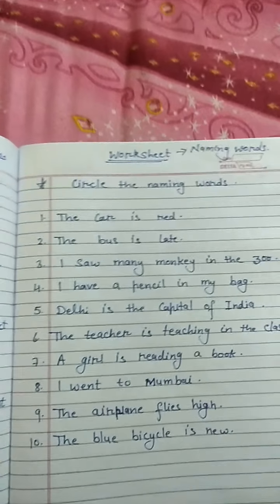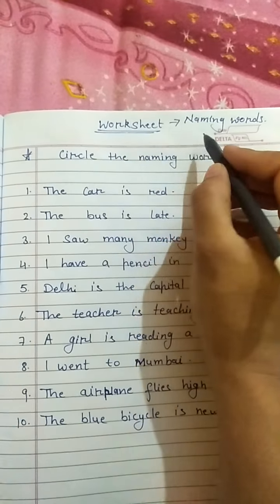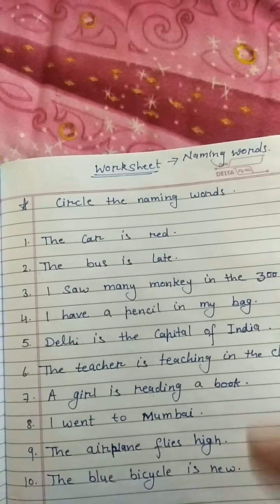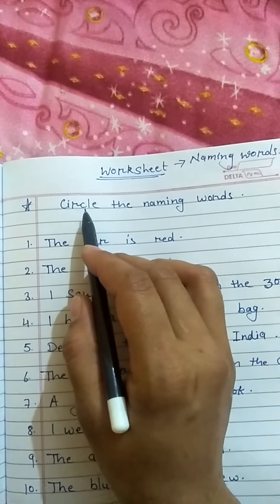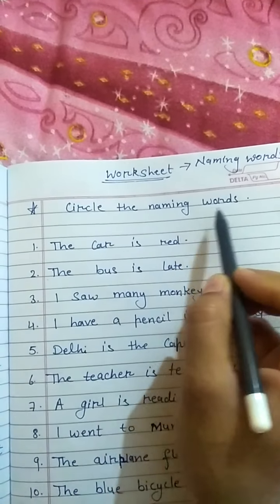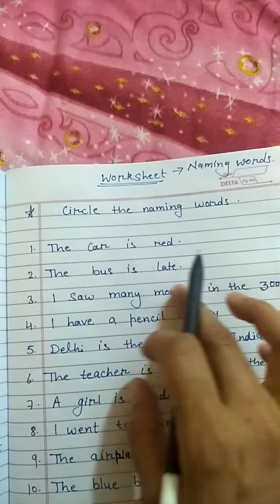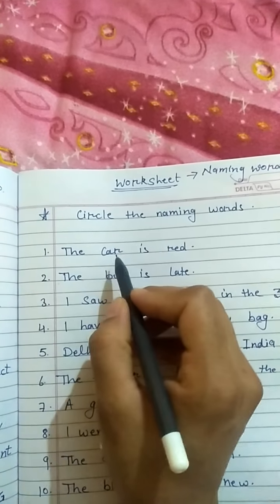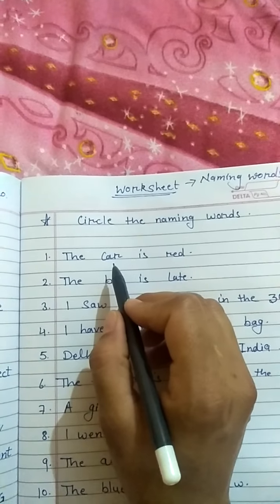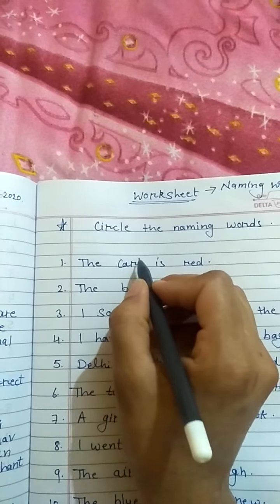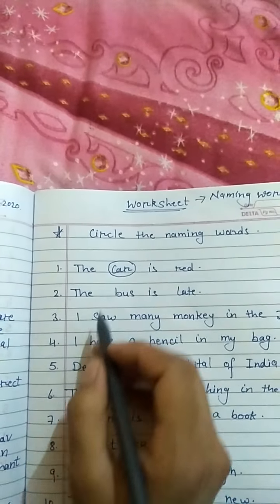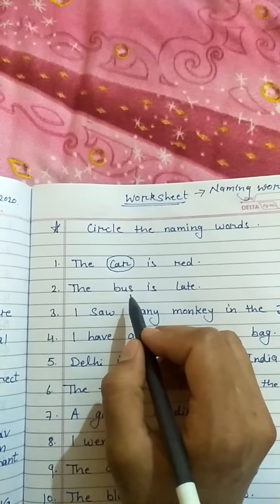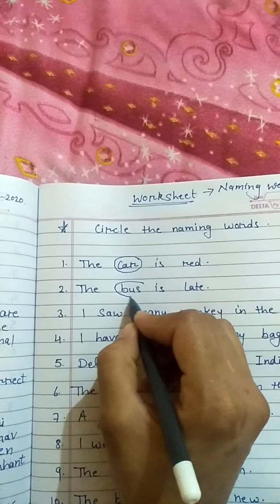Now let's look at some exercises on this worksheet for naming words. In this exercise, we circle all the naming words. First one: the car is red — the naming word here is car. Car is a naming word. Next one: the bus is late — bus is the naming word here.